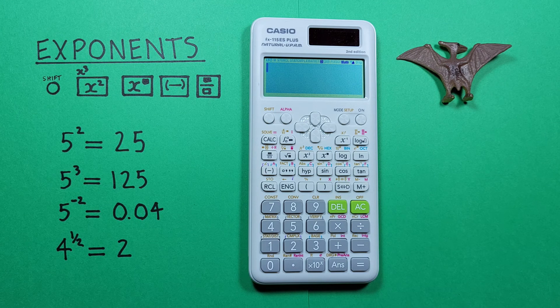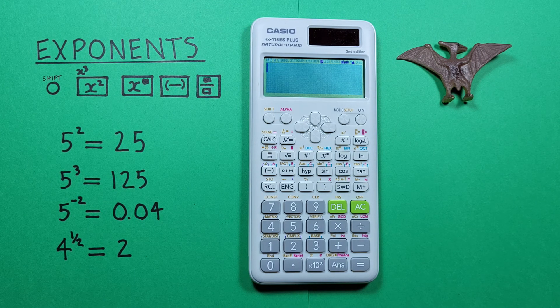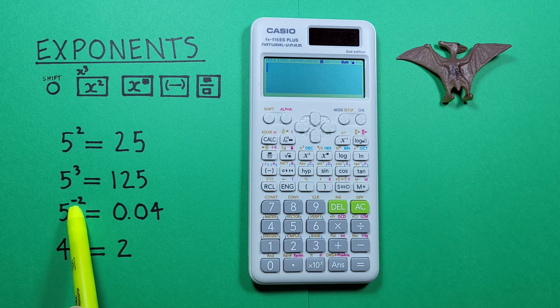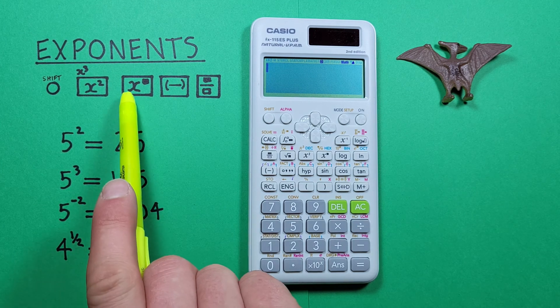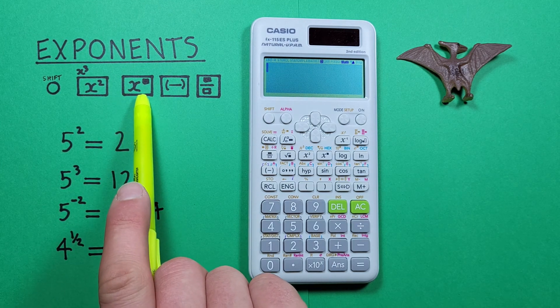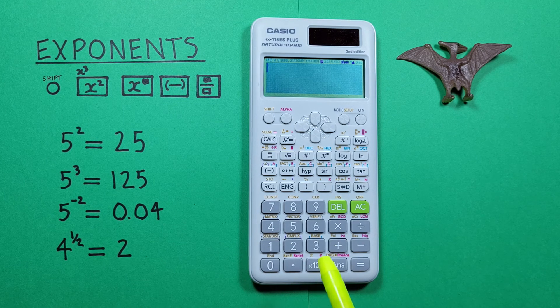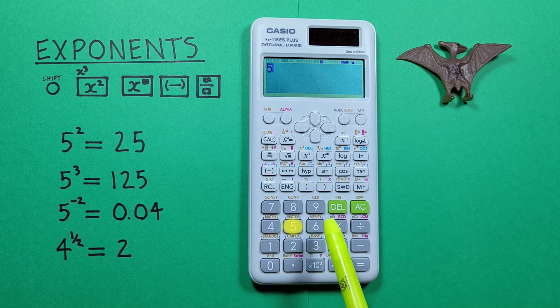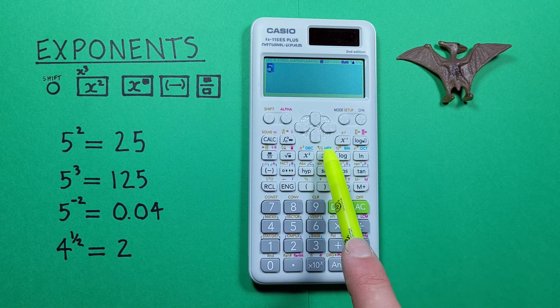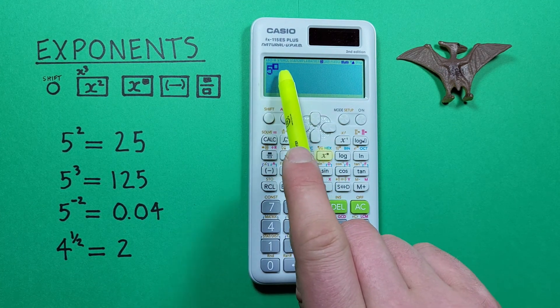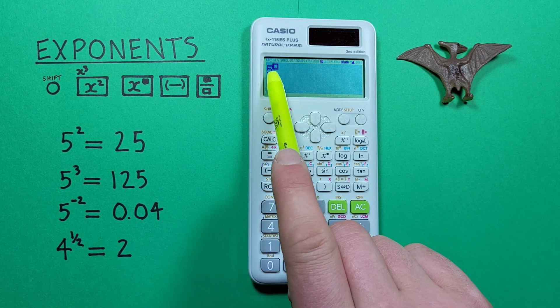What if we have an exponent that isn't a 2 or a 3? For example, we want to get 5 to the power of negative 2. Well, that's where we use this x exponent key. Again, we start by placing the 5 on our screen, and then press the x exponent key here, and we now have a box in the exponent position where we can put whatever we need to in.